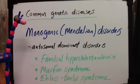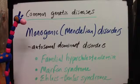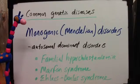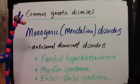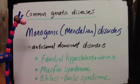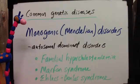Let's start with the autosomal dominant disorders. To summarize, this affects both homozygotes and heterozygotes, but it is usually heterozygotes, which means that there is an inheritance from one parent. In an autosomal dominant disorder, you only need one allele for it to be expressed, whereas in autosomal recessive you would need both.